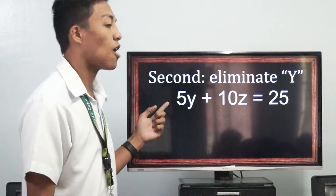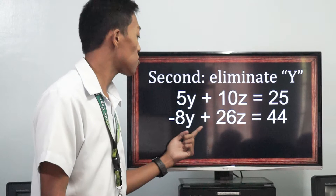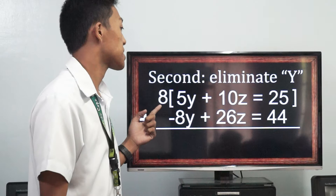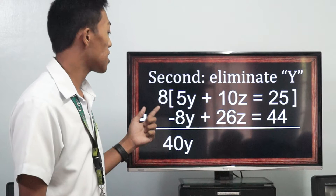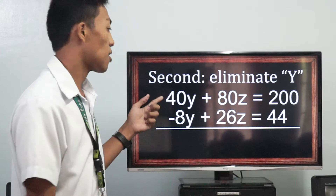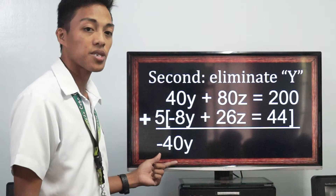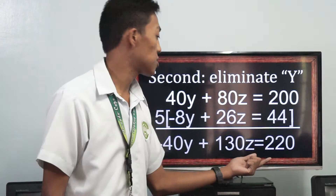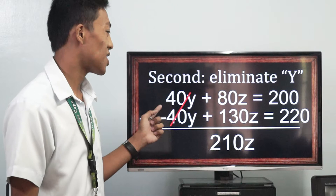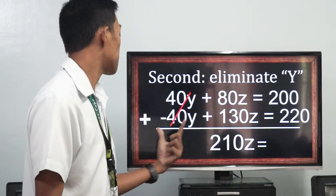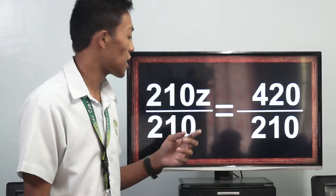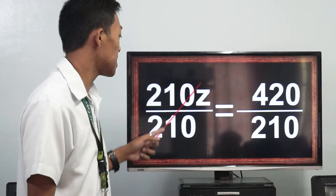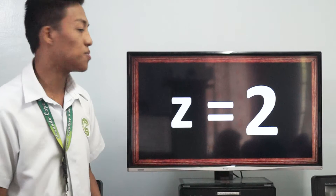Now, let's eliminate y from the fourth and fifth equations. Fourth equation: 5y plus 10z equals 25. Fifth equation: negative 8y plus 26z equals 44. Let's multiply the fourth equation by positive 8: 8 times 5y equals 40y, 8 times 10z equals 80z, and 8 times 25 equals 200. Let's multiply the fifth equation by 5: 5 times negative 8y equals negative 40y, 5 times 26z equals 130z, and 5 times 44 equals 220. Let's eliminate 40y and negative 40y and proceed to addition: 80z plus 130z equals 210z, and 200 plus 220 equals 420. To find z, let's divide both sides by 210 using the division property of equality. 420 over 210 equals 2. We have the value of z equals 2.